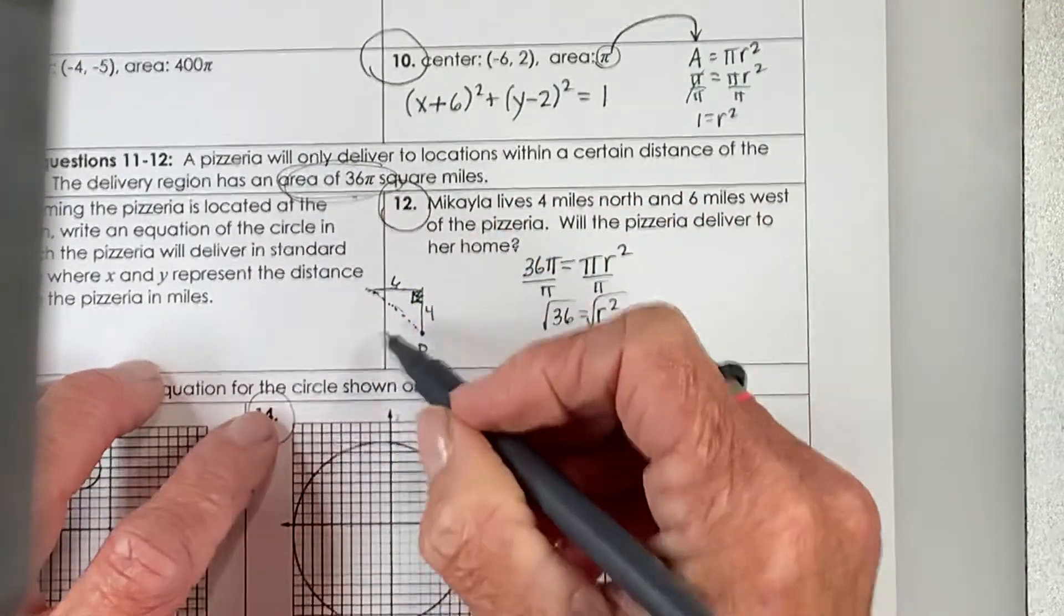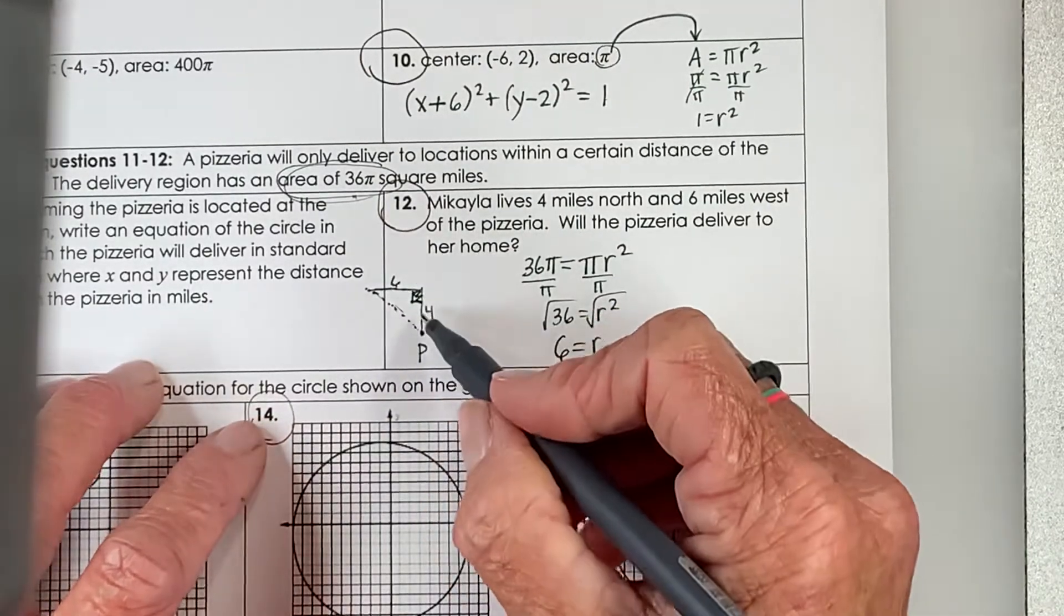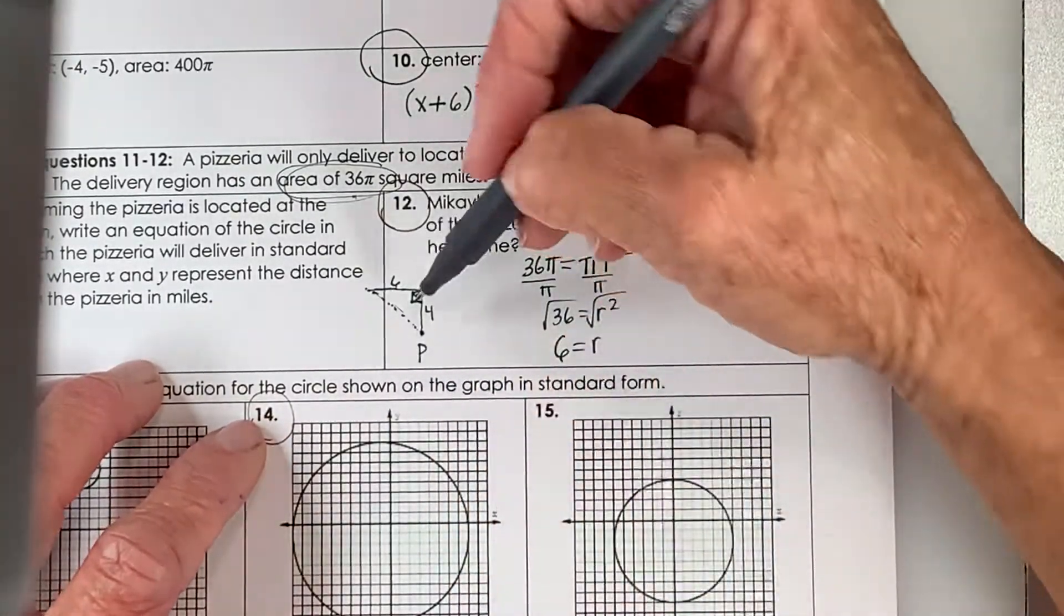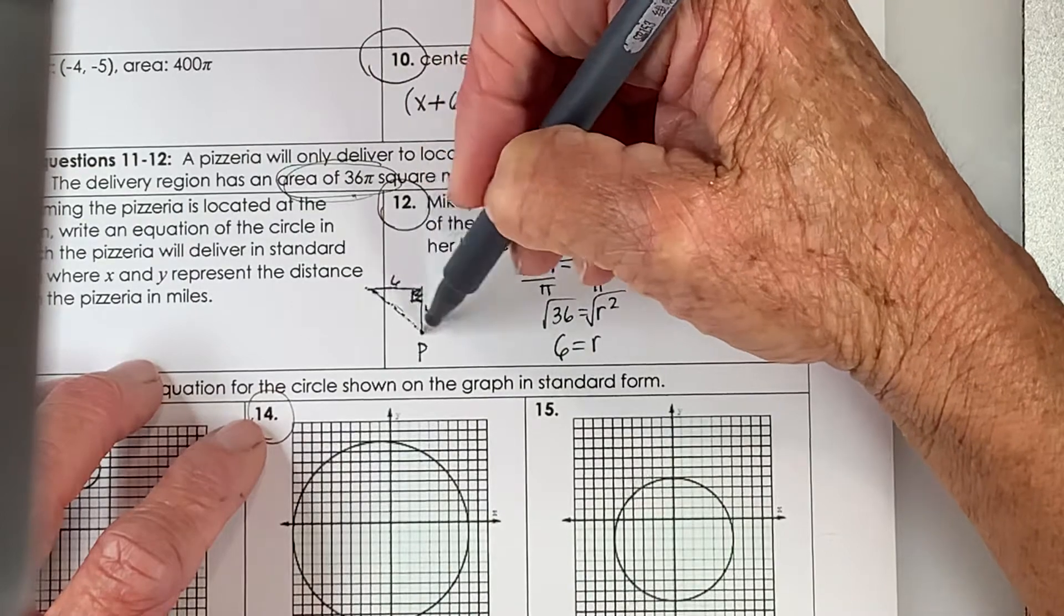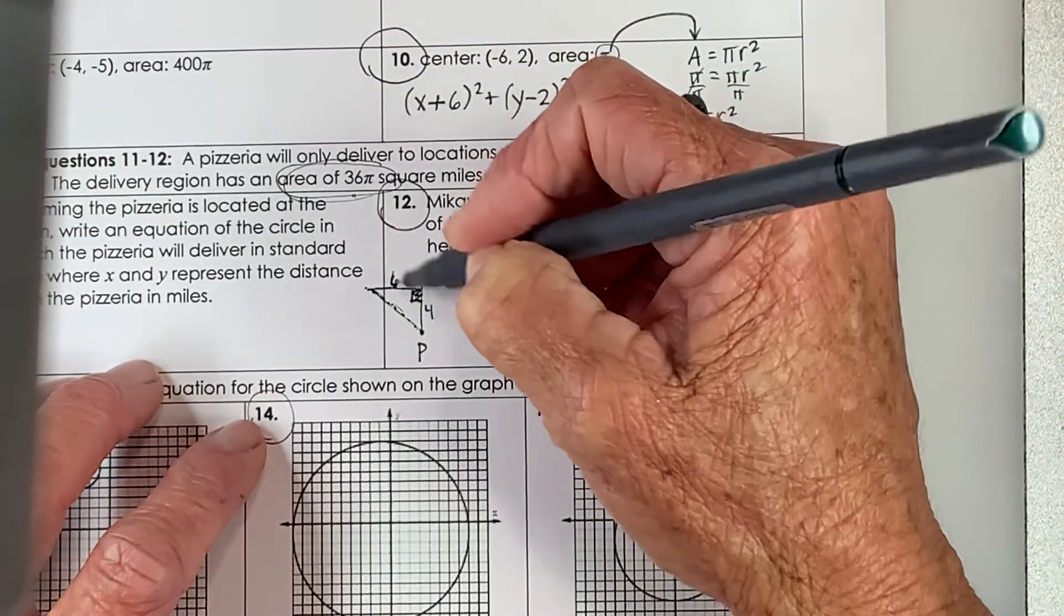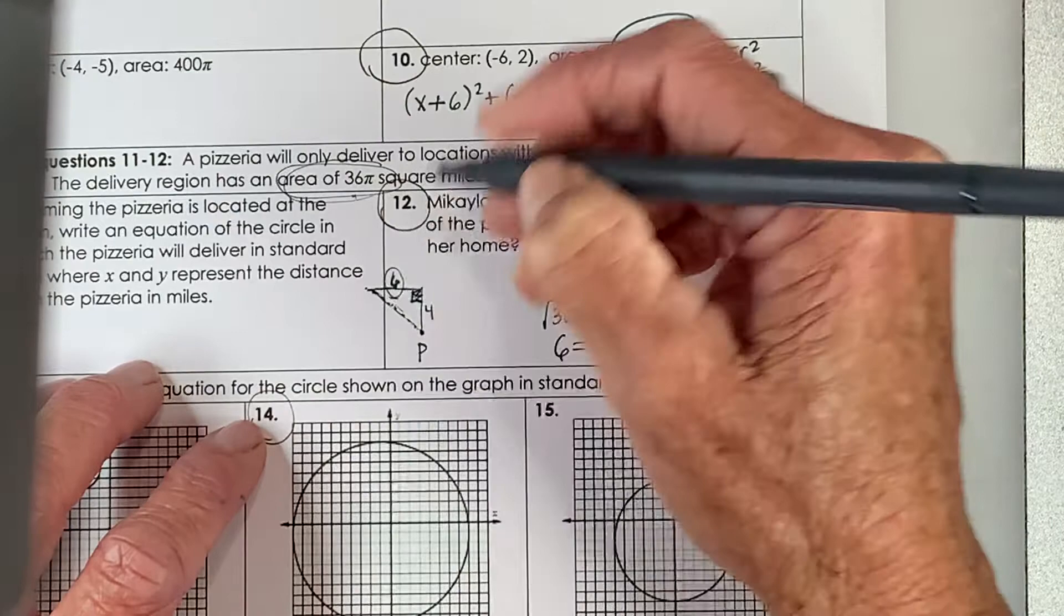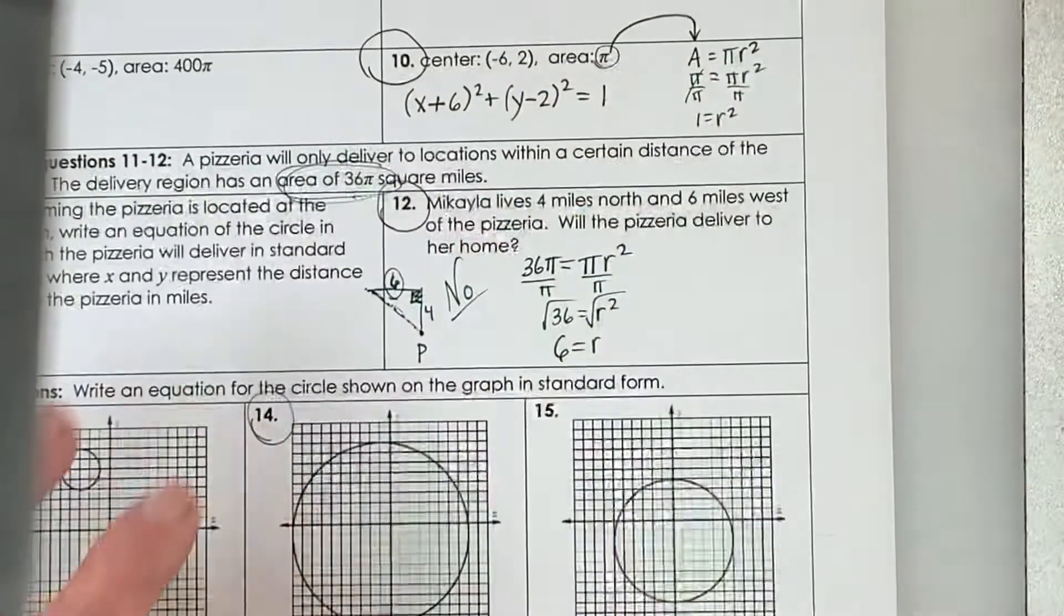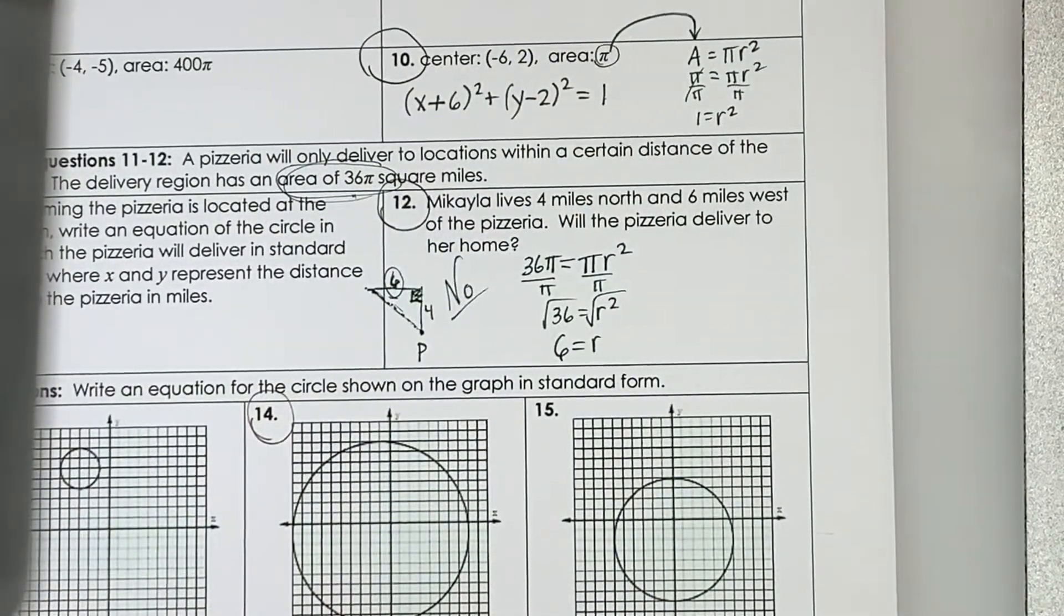Now, I don't even have to work this problem out to know that she's outside of their delivery area because we know the hypotenuse of the triangle has to be larger than either of these two sides, and one of our legs is already 6. So, no, she lives too far away, outside the zone.